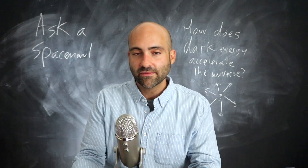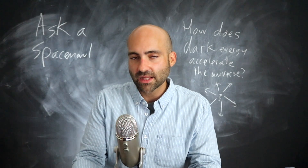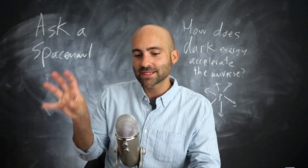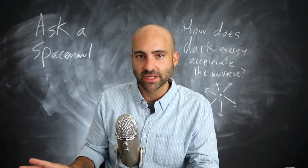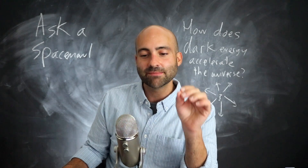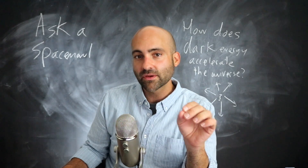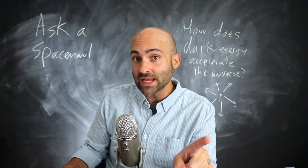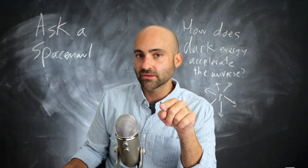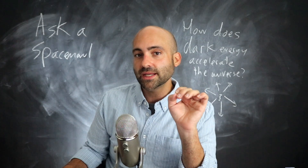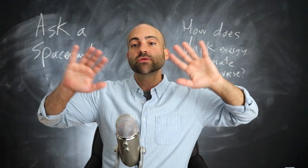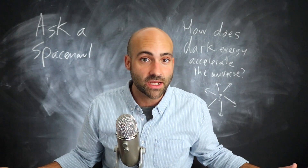I know that doesn't make a lot of intuitive sense, and in the next video I'll dig into how that accelerated expansion actually occurs. But for this video, I just want to make the point that the simplest explanation we have for all available evidence is a single number inserted into Einstein's equations of general relativity, which is able to explain the wealth of cosmological data.